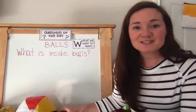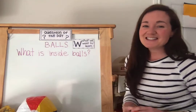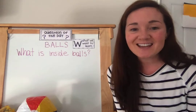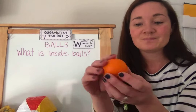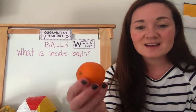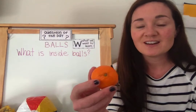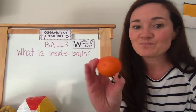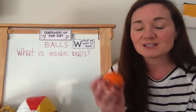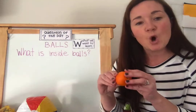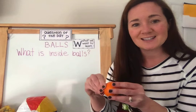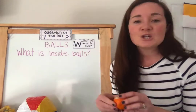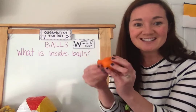Now our last ball isn't a ball that you would play with, but it's ball-shaped. It's round. It's a sphere. And it's a piece of fruit — this is a mandarin orange. We also have clementine oranges, which look very similar. They're small oranges that are easy to peel. And if we open this up, what do you think will be inside? Do you think there's air inside this ball? Do you think there's rubber inside this orange?